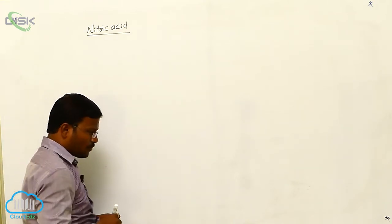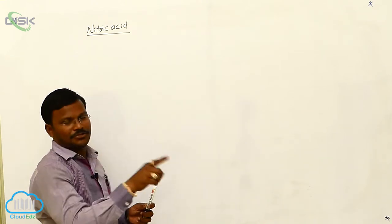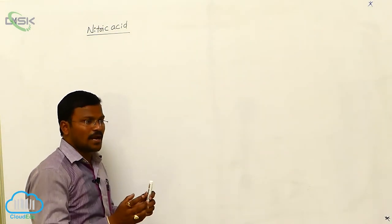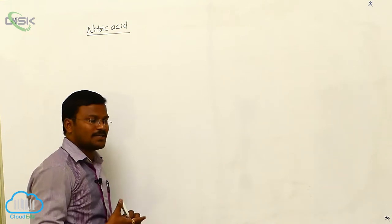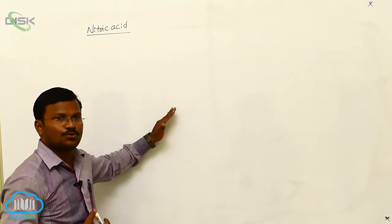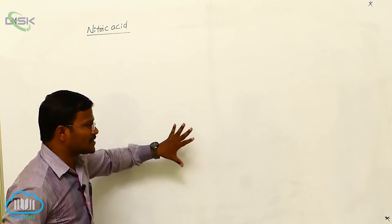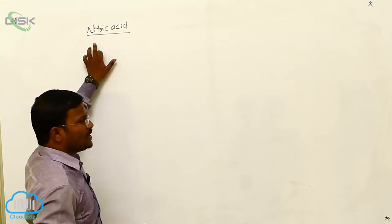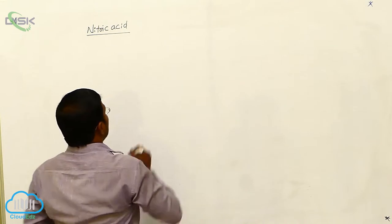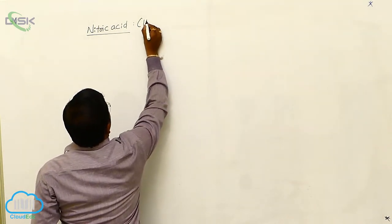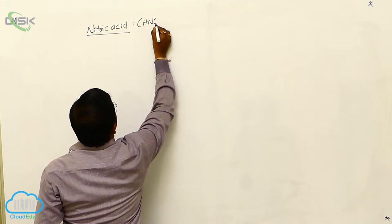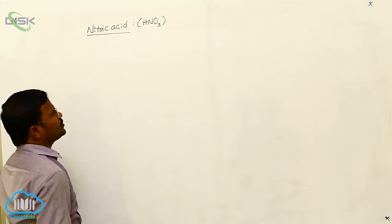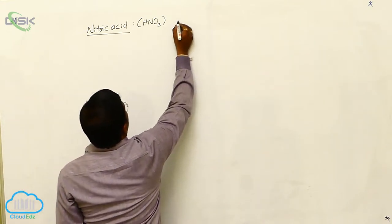After completion of topics related to nitrogen — ammonia (NH₃) and six nitrogen oxides, in which nitrogen shows different oxidation states from +1, +2, +3, +4, to +5 — the next topic is nitric acid. The molecular formula of nitric acid is HNO₃. The oxidation state of nitrogen in nitric acid is +5.